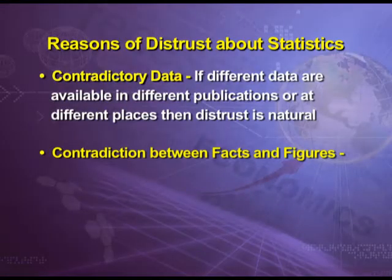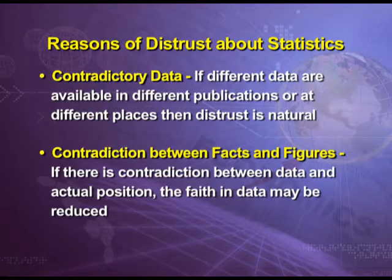The second reason behind distrust is contradiction between facts and figures. If there is contradiction between data and the actual position, the faith in data may be reduced. For example, if it is generally felt that prices are increasing, but the government shows with data that the price level is going down, then there will definitely be distrust in the data.